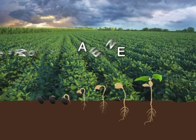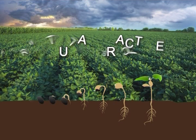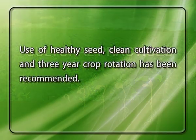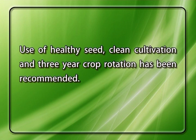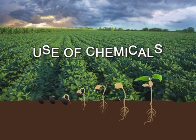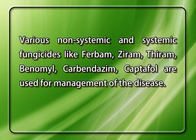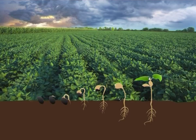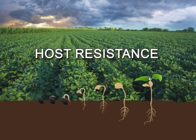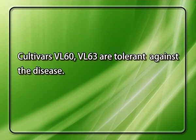Now let's see how to manage the disease. For cultural practices, use of healthy seeds, clean cultivation and three-year crop rotation are recommended. For chemical management, various non-systemic and systemic fungicides like Ferbam, Ziram, Thiram, Benomyl, Carbendazim, and Captafol are used. For host resistance, cultivars VL 60 and VL 63 are tolerant against the disease.